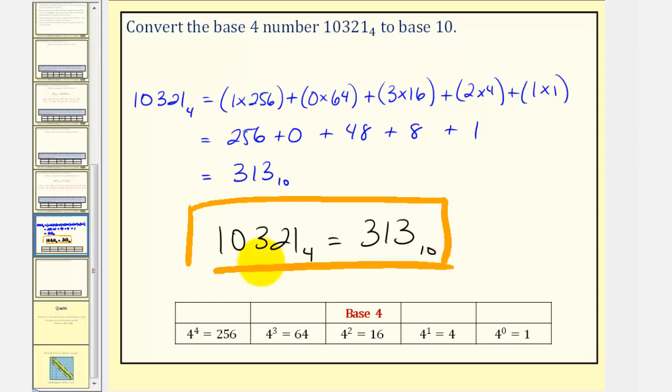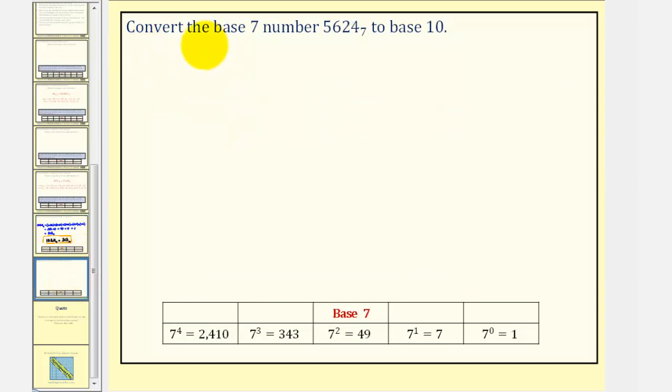Let's take a look at one more example. Let's convert the base 7 number 5,624 to base 10. So we have 7 to the 0, 7 to the 1, 7 to the 2nd, 7 to the 3rd, and 7 to the 4th. Because our number only has 4 digits, we only need these 4 place values.